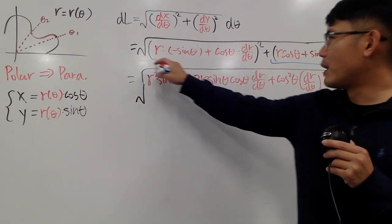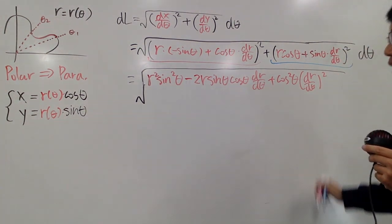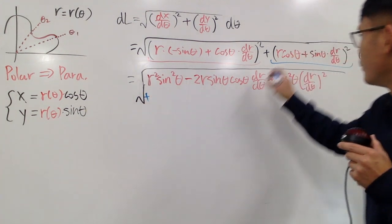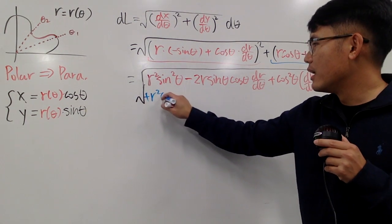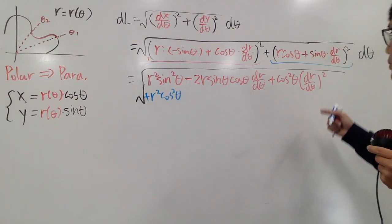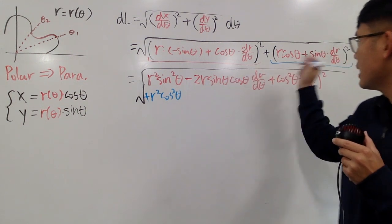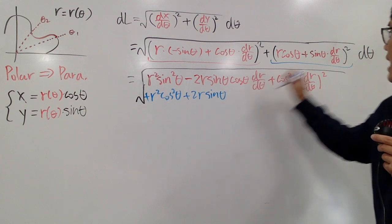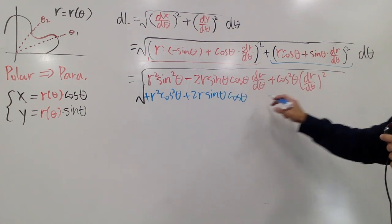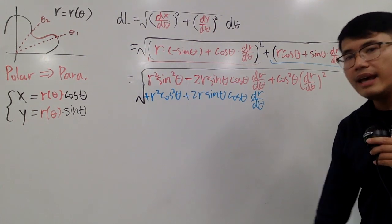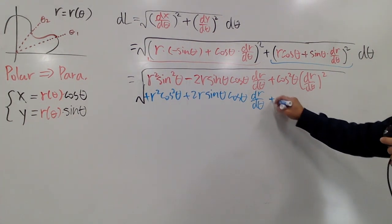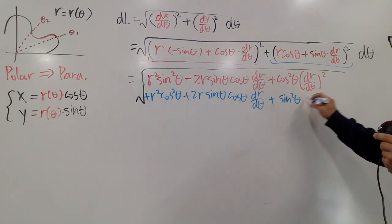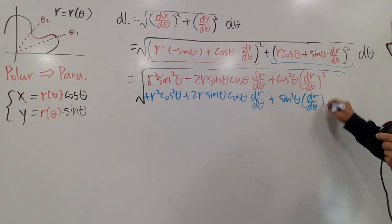Now for the second part — expanding dy/dθ squared — we add R² cos²θ, then plus 2R cosθ sinθ · (dR/dθ), and finally plus sin²θ · (dR/dθ)². Note that (dR/dθ)² is not a second derivative — it means you find the first derivative and then square it.